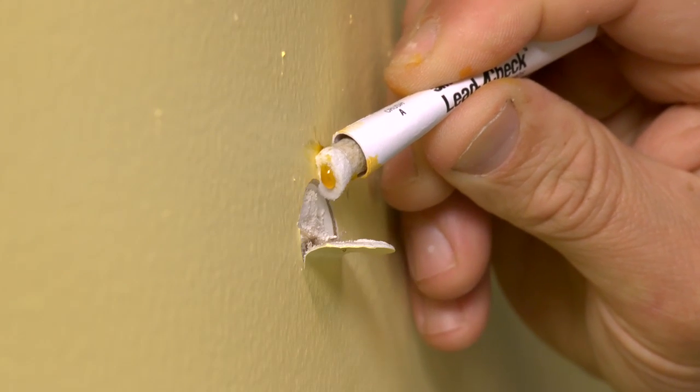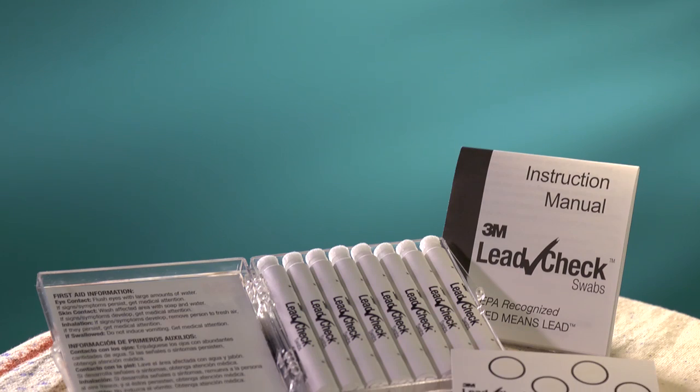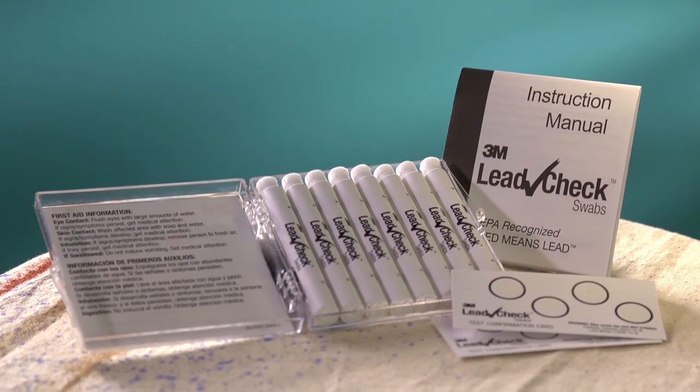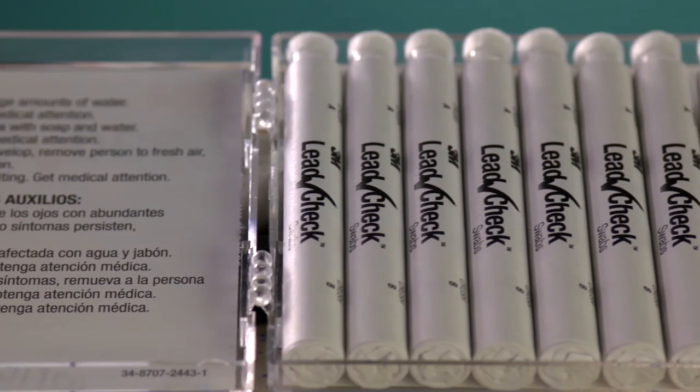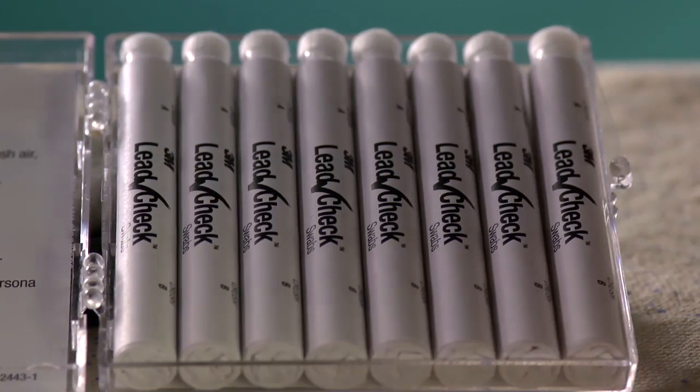This test method is for testing painted drywall and plaster surfaces for the presence of lead. This method is described in detail in the instructions that are in your kit. For this test, you will need one or more 3M LeadCheck swabs.